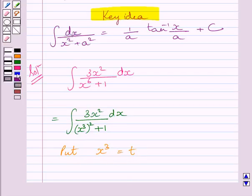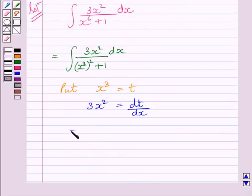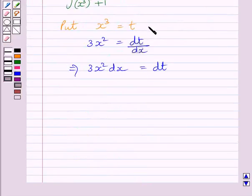Differentiating both sides with respect to x, we get 3x² = dt/dx. This further implies 3x² dx = dt. Let us name these expressions as (1) and (2).